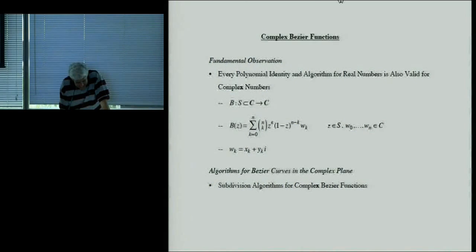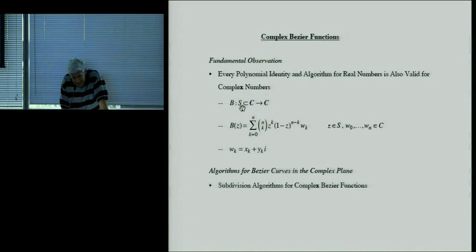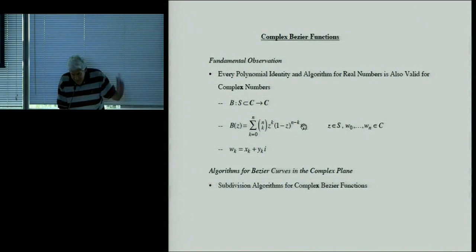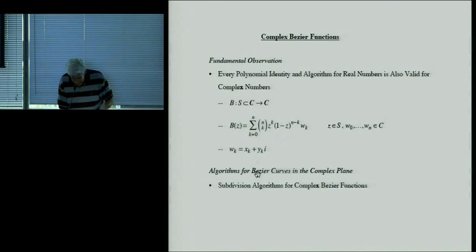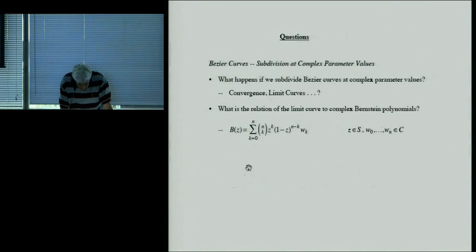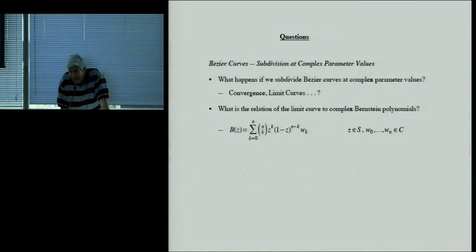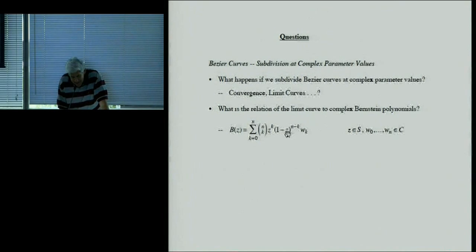I'll rewrite the Bernstein polynomials with a complex variable Z instead of real T. Here's my formula for the complex Bézier function — Z is complex and the control points W are also complex. What happens if we subdivide at a complex number, say one-half plus one-half·i? Will it converge? What does the limit curve look like, and how is it related to this complex Bernstein function? That's what I want to look at.